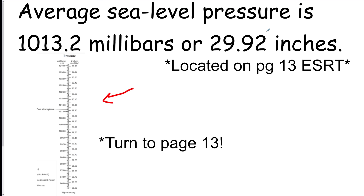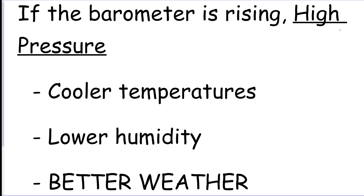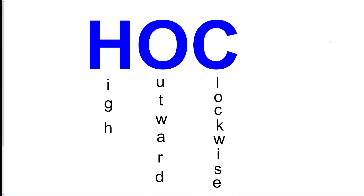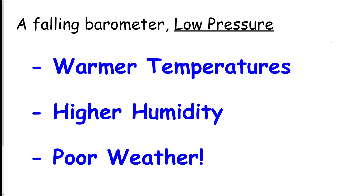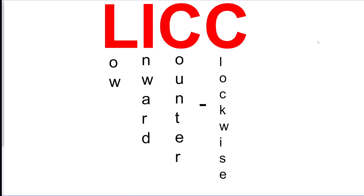Sea level pressure is 1013.2 millibars, listed as one atmosphere on the reference table. High pressure means cooler temperatures, lower humidity, and better weather — and it spins outward and clockwise; remember that with HOCK. Low pressure means warm, high humidity, and poor weather — and it spins inward counterclockwise; remember that with LICK.